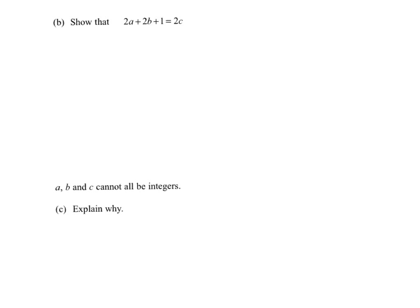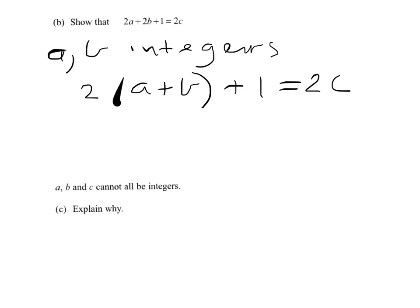I've got to explain why a, b, and c cannot all be integers. Well, let's suppose that a and b are integers. Then a simple bit of algebra here will show me that 2(a + b) + 1 equals 2c. If I divide everything through by 2, I get a + b + 1/2 equals c.